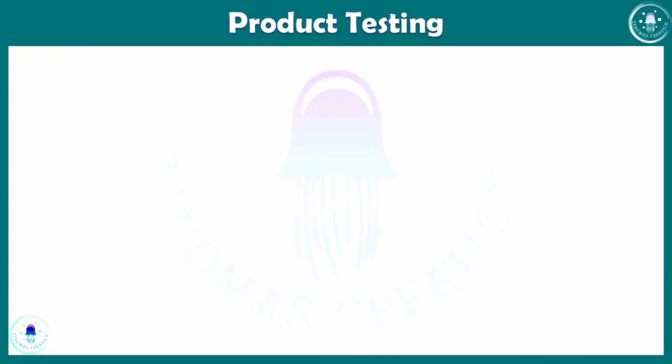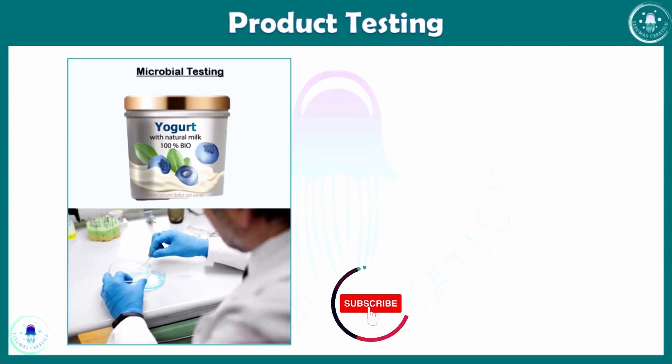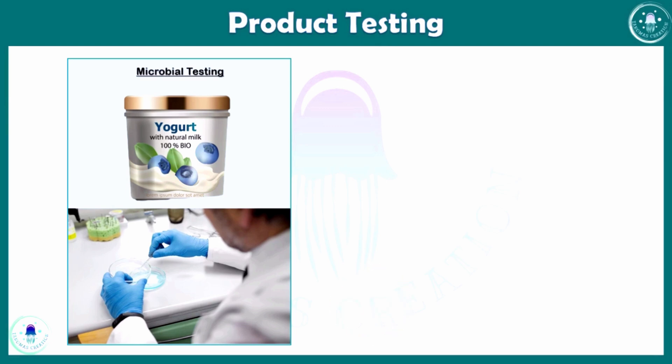The final area is product testing. Whatever the food industry has produced needs to go through a quality check. Microbial testing of finished products ensures they are free from harmful microorganisms. For example, dairy companies test yogurt for Listeria before distribution.